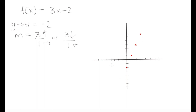To complete the graph on the other side, we extend the points in the downward direction. From our starting point we go down 3 — 1, 2, 3 — and left 1, giving a point over here. Then down 3 again and left 1, giving another point slightly off the axis. We connect all these dots with a line, and that is how we sketch the graph using only our y-intercept and slope.